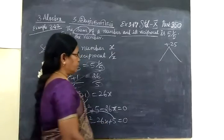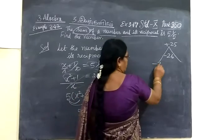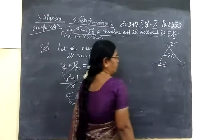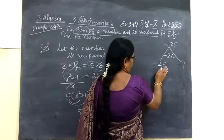So multiply to get minus 26. So minus 25 minus 1, not minus 25 plus 26.